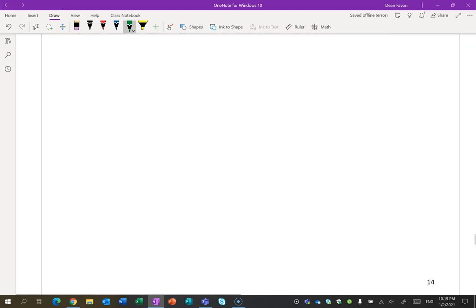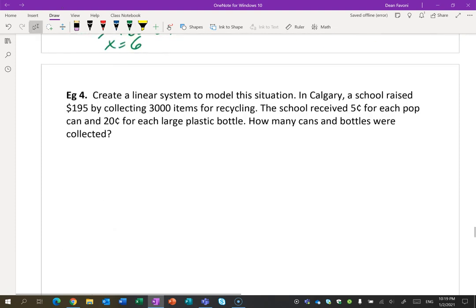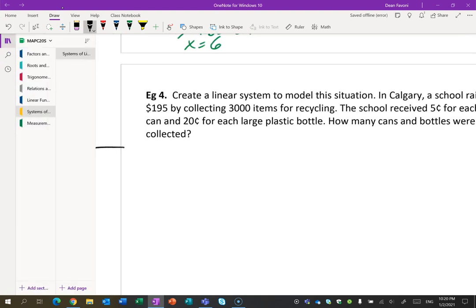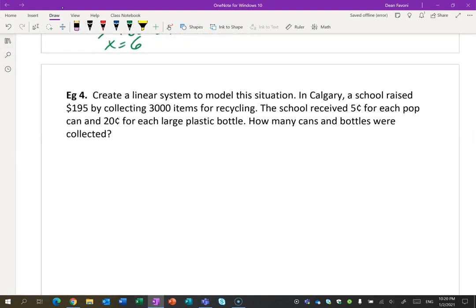And I think this is the last one. I'll start it with you and then you guys can work on your own a little bit. So in Calgary, a school raised $195 by collecting 3,000 items for recycling, 5 cents for each pop can, 20 cents for a large plastic bottle. How many of each? Let's do this to start. What have we got? X equals pop cans and Y equals large plastic bottles. You have to define that at the start.